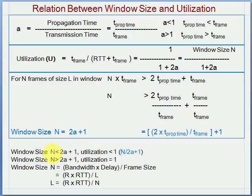If window size n is less than 2A plus 1, utilization is less than 1, calculated as n divided by (2A + 1). If n is greater than 2A plus 1, utilization will always be close to 1. We can rewrite window size n using bandwidth times delay divided by frame size, and from this formula we can also calculate frame size L for a given window.